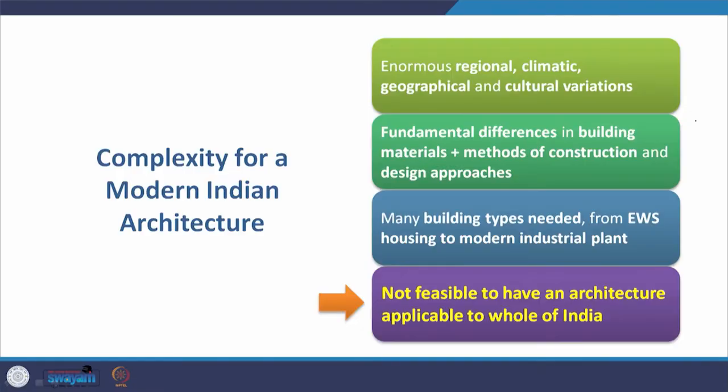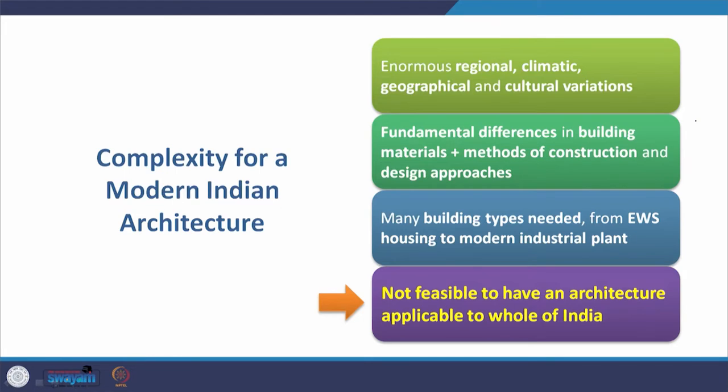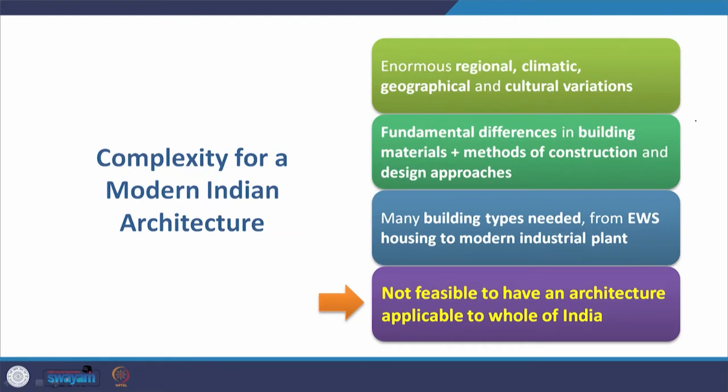In India there are enormous regional, climatic, geographical, and cultural variations. There are fundamental differences in building materials, methods of construction, and design approaches in different regions, right from traditional vernacular architecture. Many building types are needed in modern India — from economically weaker section housing to modern industrial plants and corporate buildings. Because of these vast variations in building typology and regional, cultural, climatic, and topographical variations, it is not feasible to have a single architecture applicable to the whole of India.